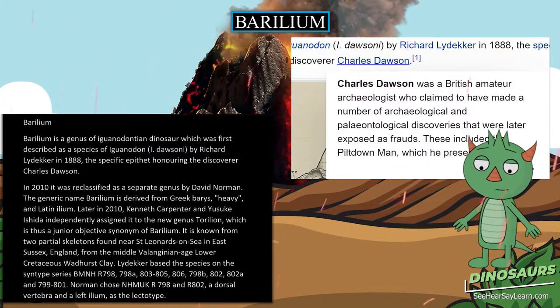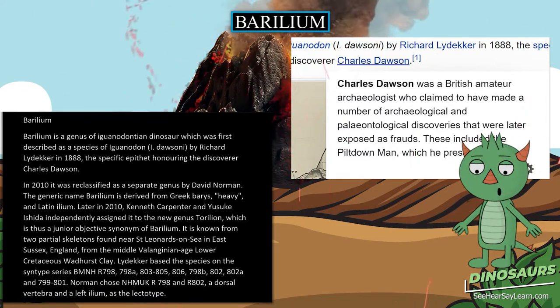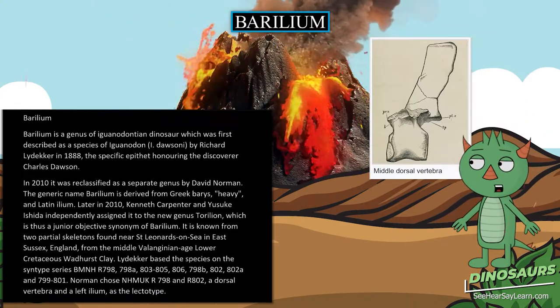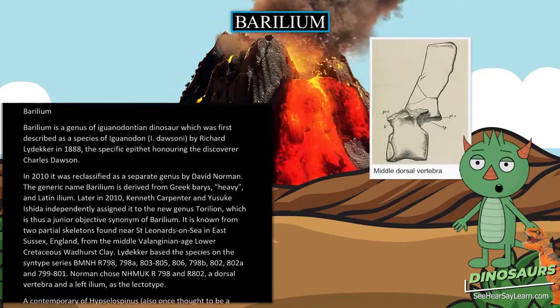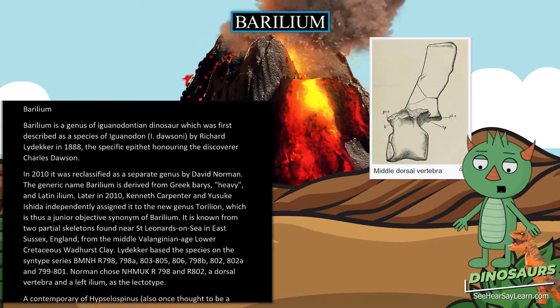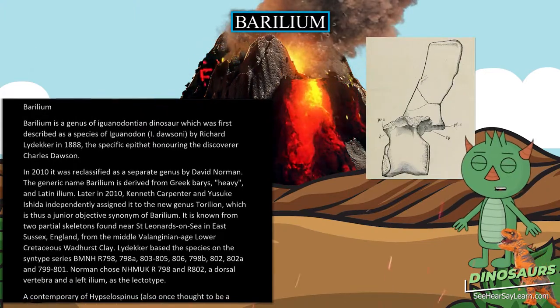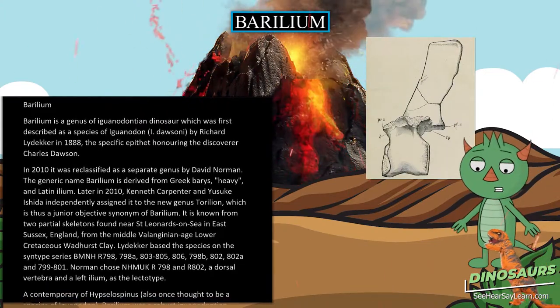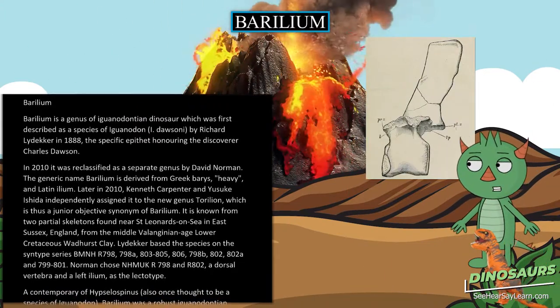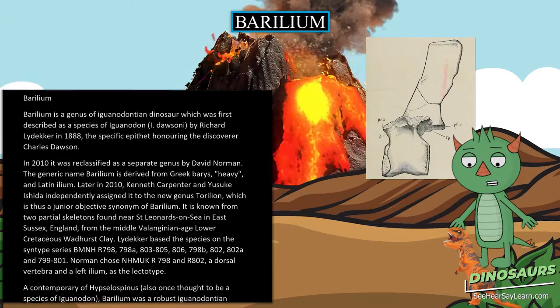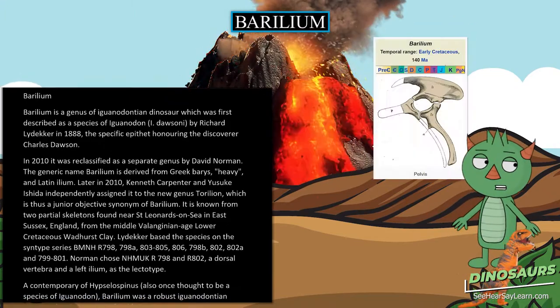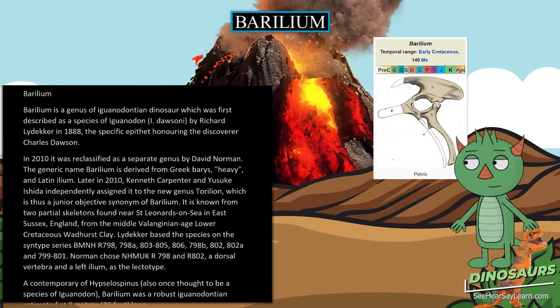The generic name beryllium is derived from Greek baris, meaning heavy, and Latin ilium. Later in 2010, Kenneth Carpenter and Yusuke Aishida independently assigned it to the new genus Deryllium, which is thus a junior objective synonym of beryllium.